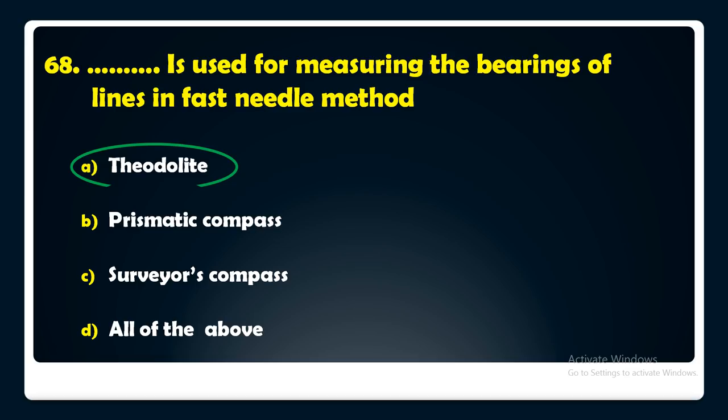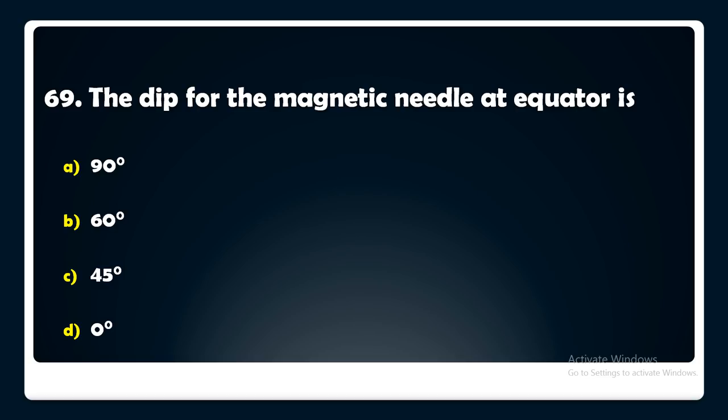The dip for the magnetic needle at the equator is — 90, 60, 45, or 0 degrees? The answer is: the dip for the magnetic needle at the equator is 0 degrees.